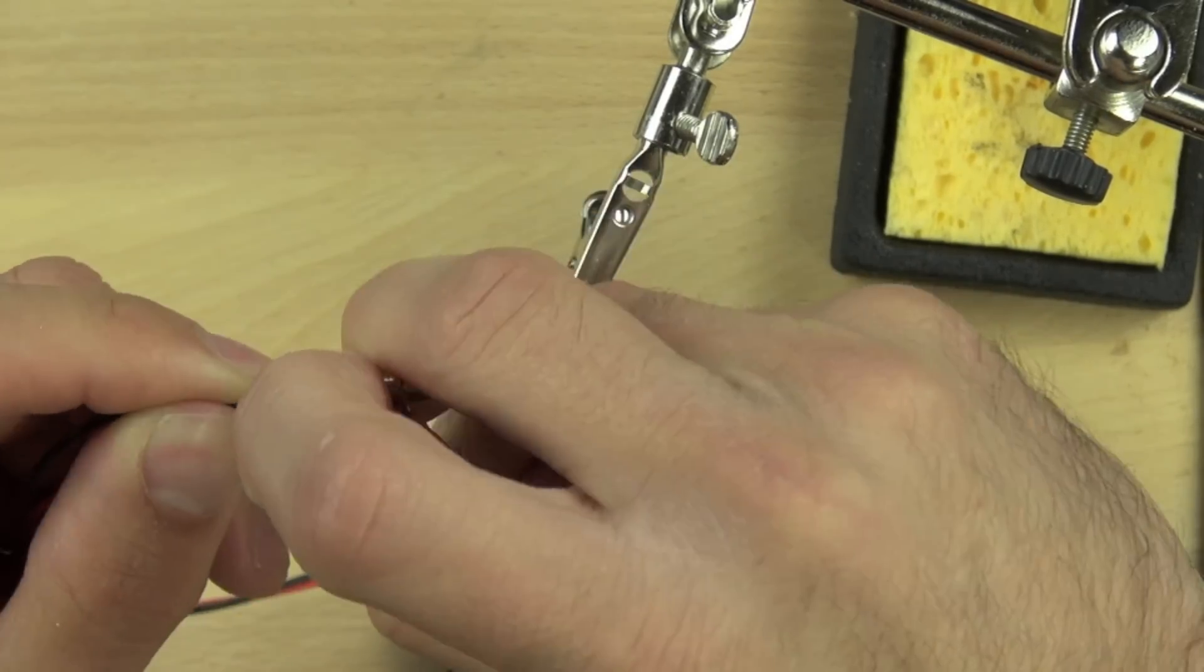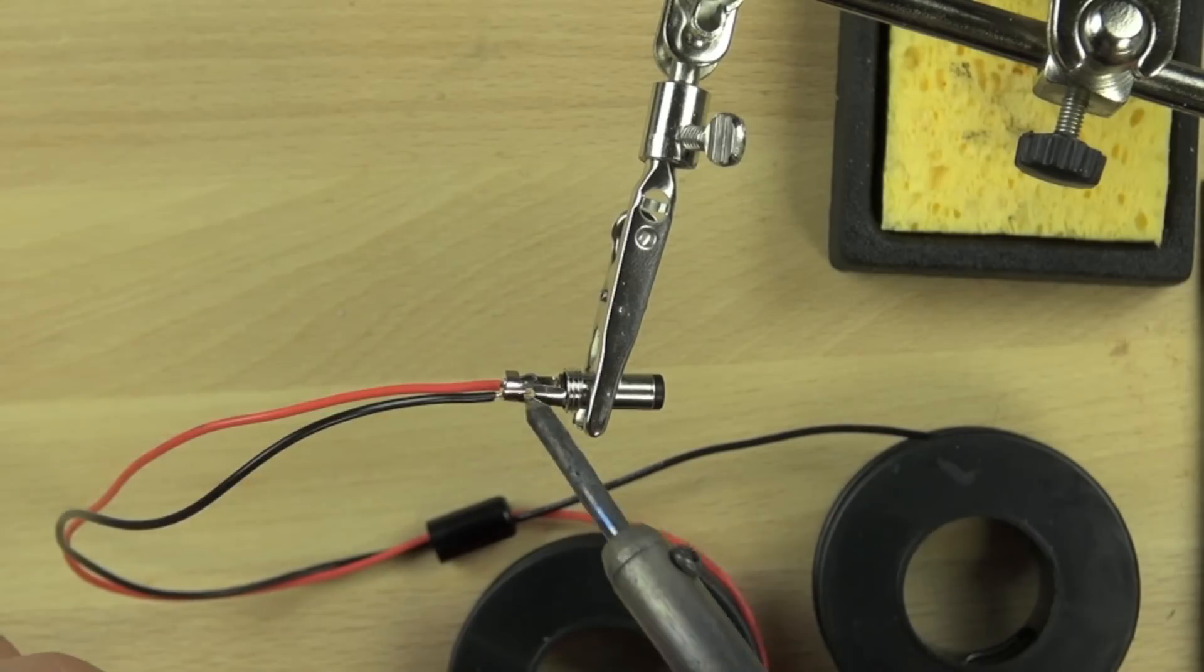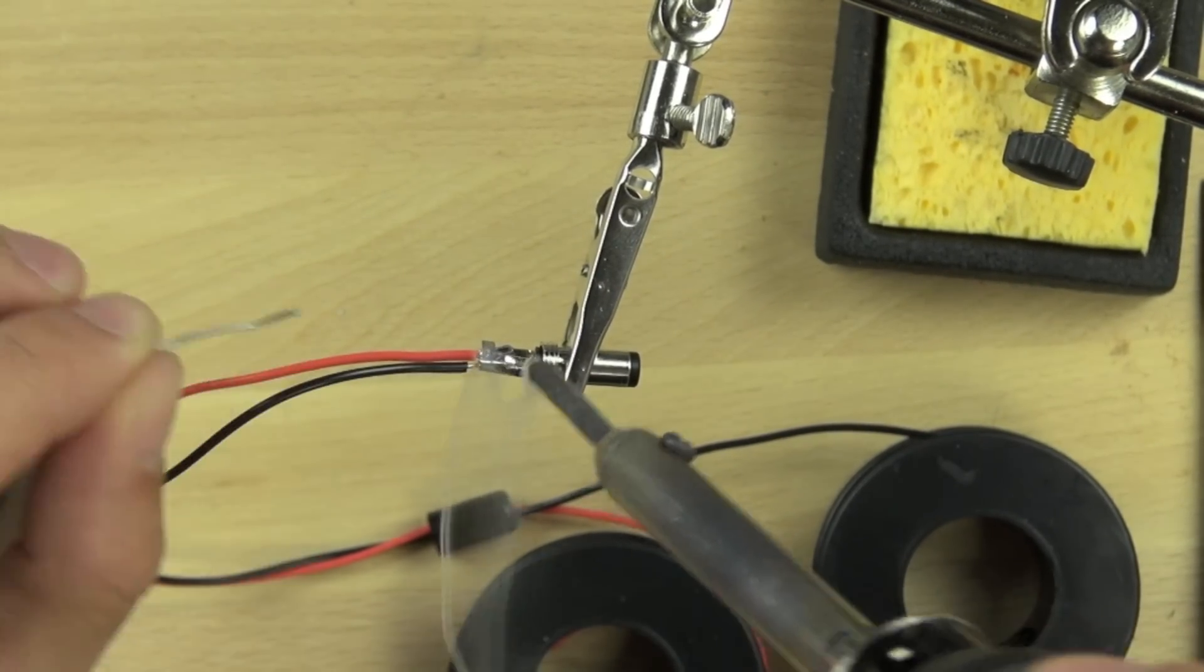Make sure we've got a good connection between the wire and the metal. Then we're going to solder that wire in place.